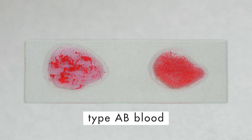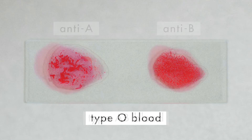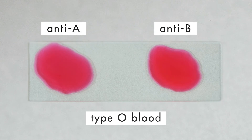The red blood cells in type AB blood will stick together with both anti-A and anti-B serums because both antigens A and B are present in its red blood cells. When type O blood is tested, no reaction occurs in either serum because type O blood has neither antigen A nor antigen B.